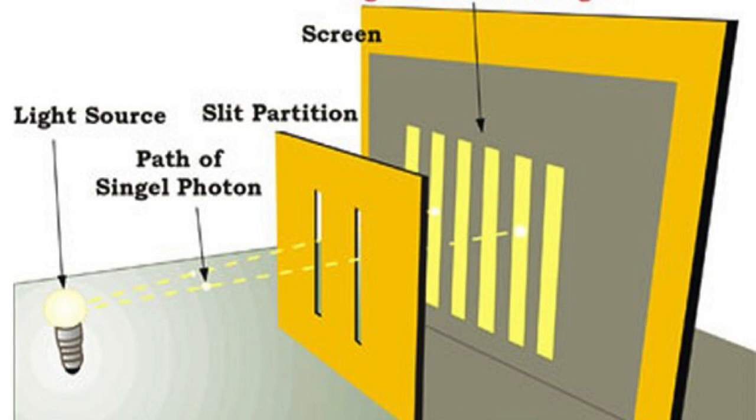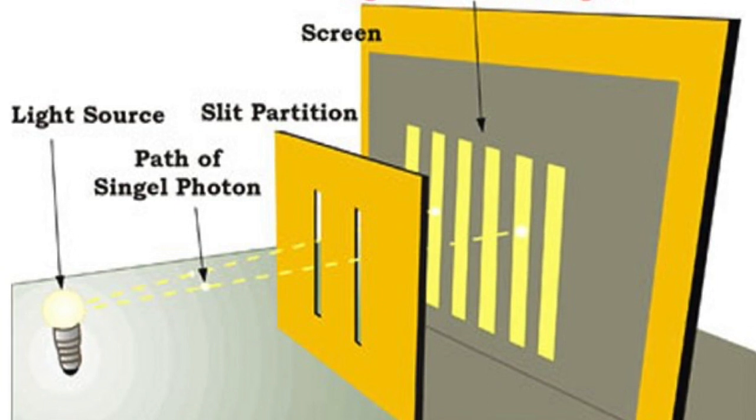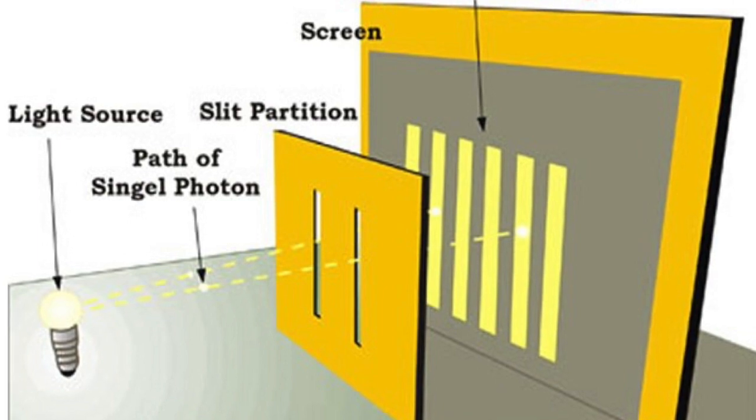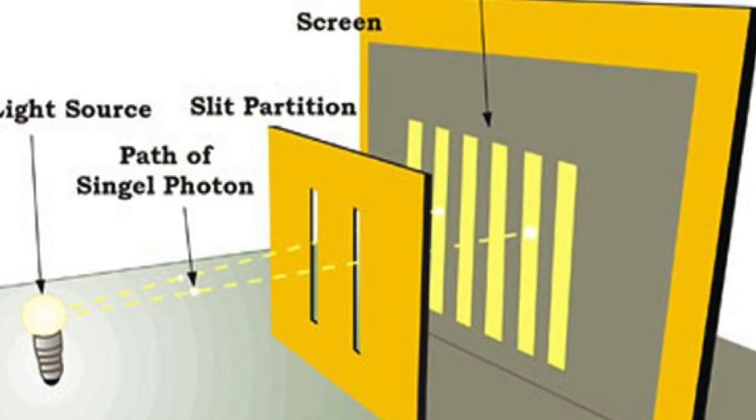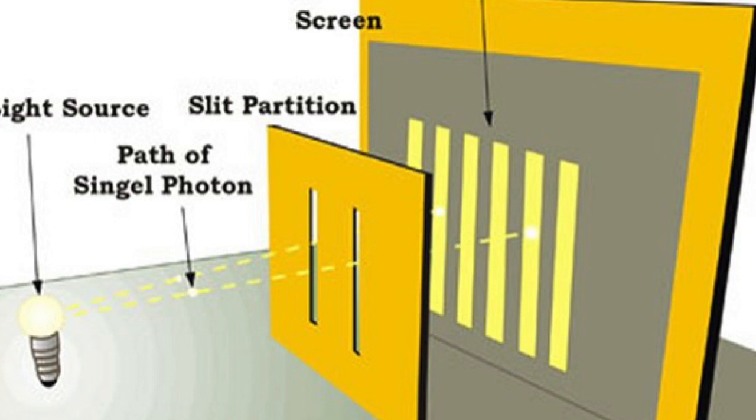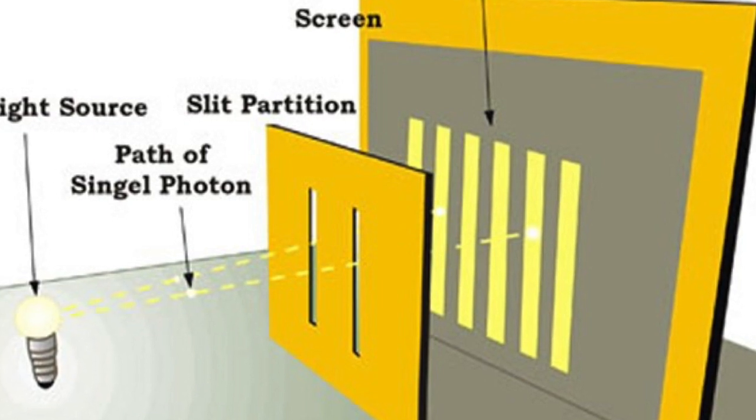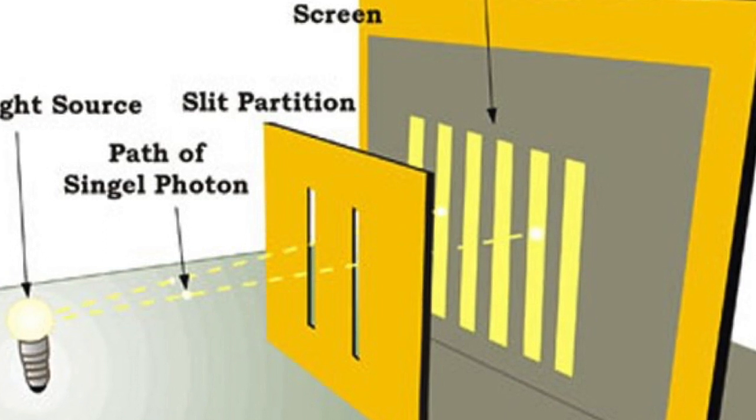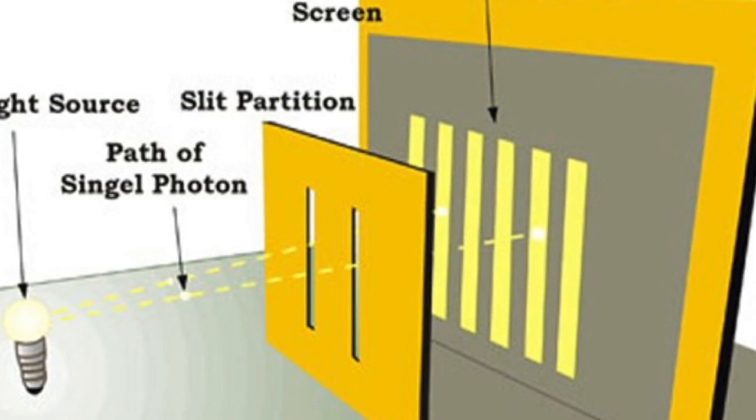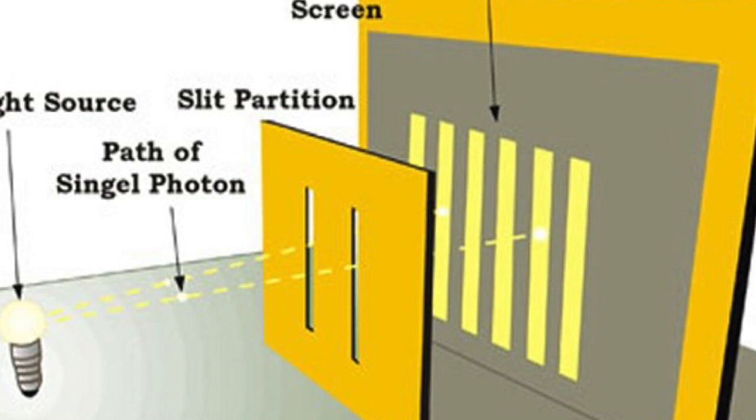The double slit experiment is a famous experiment that reveals the strange behavior of matter responding to observation. When physicists fire electrons through a screen with two slits, they expect two lines to form on the detector screen behind it. This reasoning seems logical because we would see that result if we fired marbles or BBs through a screen with two small slits. But there is a big difference between firing huge pieces of matter, relatively speaking, of course, like marbles and firing incredibly small pieces of matter like electrons. The subatomic realm does not follow the same rules as the macro world and can indeed be rather spooky as Einstein labeled it.